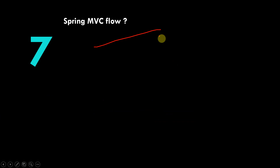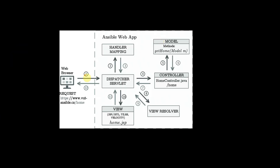The seventh question is about the Spring MVC flow. Your web browser acts as a client hitting an endpoint or API. The request first comes to the DispatcherServlet. It then goes to the HandlerMapping, which finds the correct controller for that endpoint and returns its name and location back to the DispatcherServlet. The DispatcherServlet then forwards the request to the actual controller.